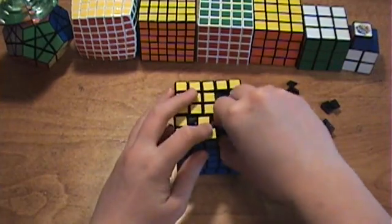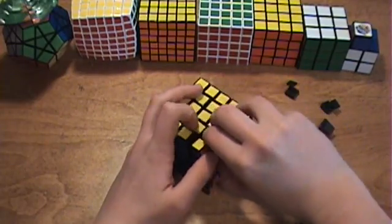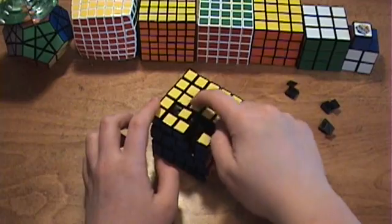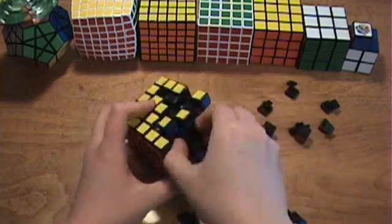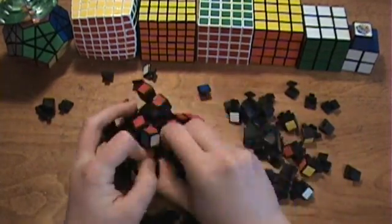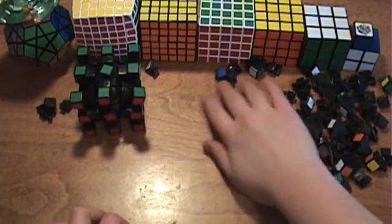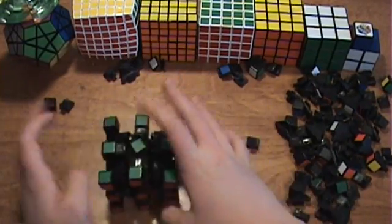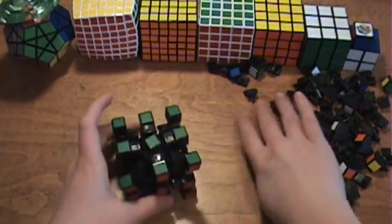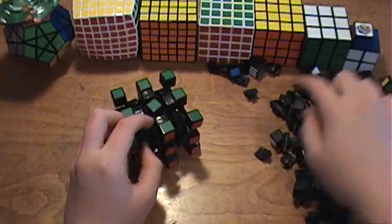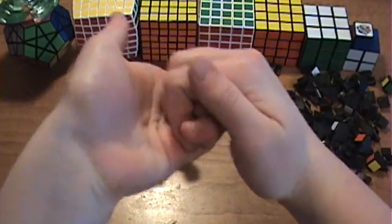So now just continue taking out these middle pieces until you're left with the center edge pieces and the corners and the centers. Now shove all of these pieces aside here. And now we're going to take apart this basically like a 3x3. But it is held together a lot tougher than the 3x3 is. Like the pieces lock together.